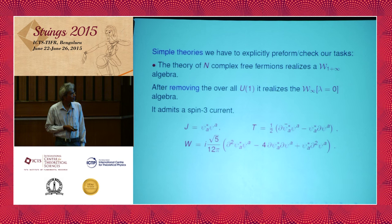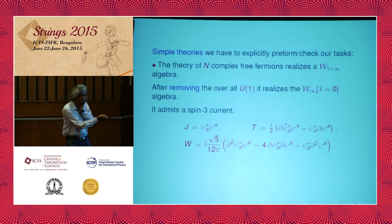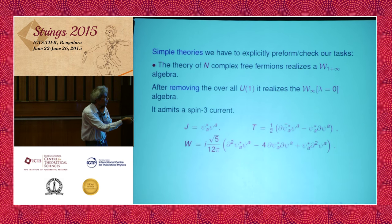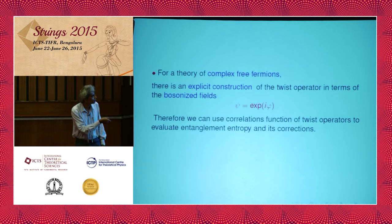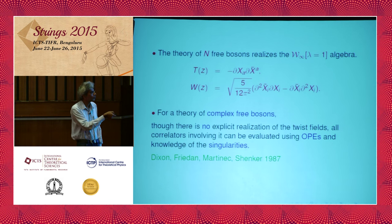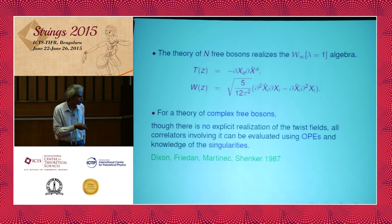The simple theories we use for these checks include N complex free fermions, which realize the W_{1+∞} charge algebra. The spin-3 current is explicitly visible in this realization, and there is an explicit construction of the twist operator in terms of bosonized fields. We also have the theory of N bosons, which realizes W_∞ with lambda equals 1. For the complex boson theory, though there is no explicit realization of twist operators, one can evaluate correlators using methods developed during the early string perturbation theory days.